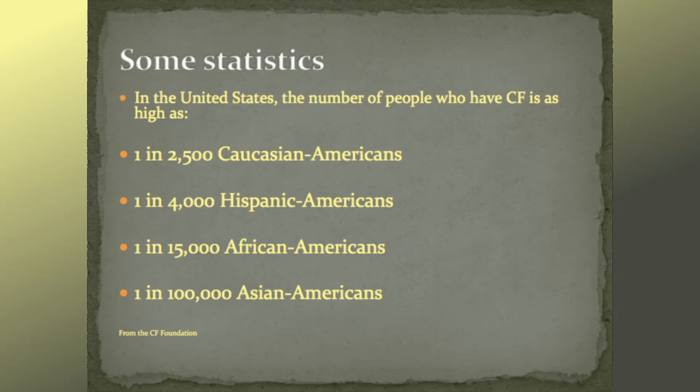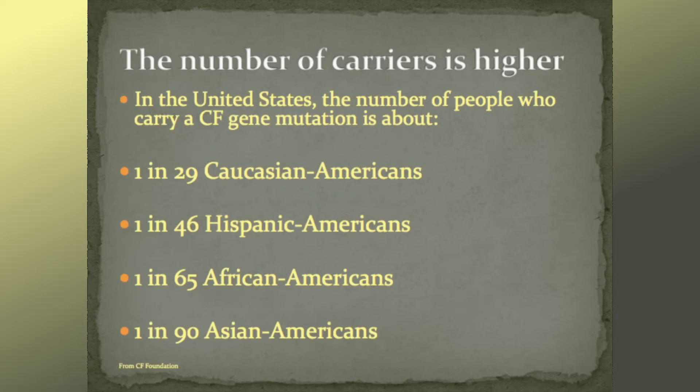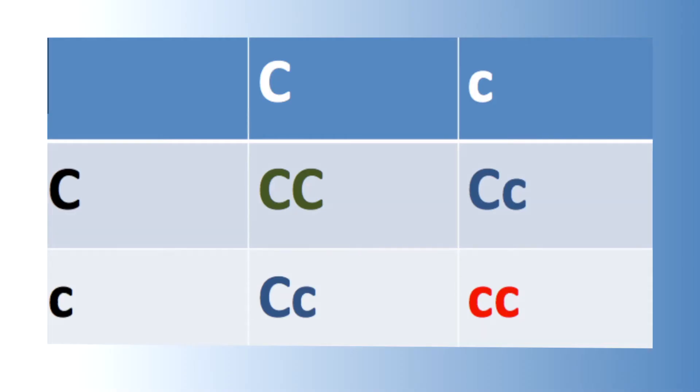Cystic fibrosis is most common in Caucasian Americans and least common in Asian Americans. Andrina was Hispanic. CF is even more common in carriers, people who don't have the disease but carry the recessive gene. This Punnett Square shows that CF is a recessive genetic disease that is inherited approximately 25% of the time in the offspring of parents who carry the gene for CF.